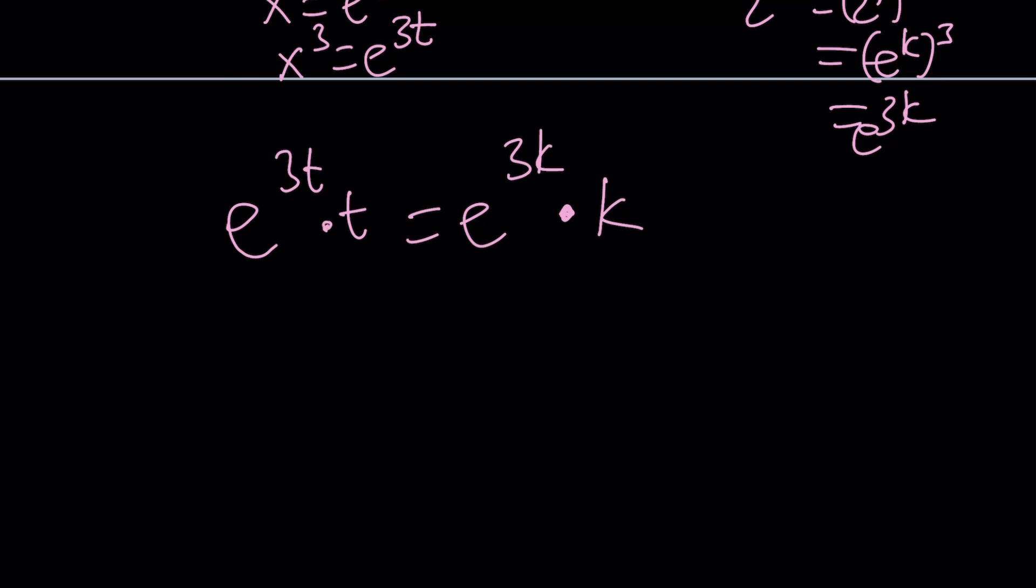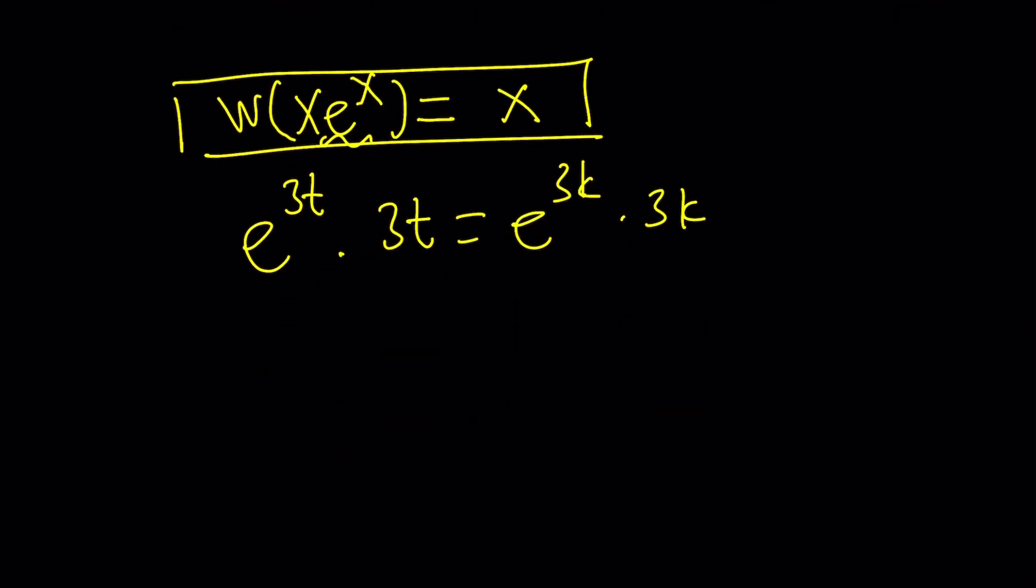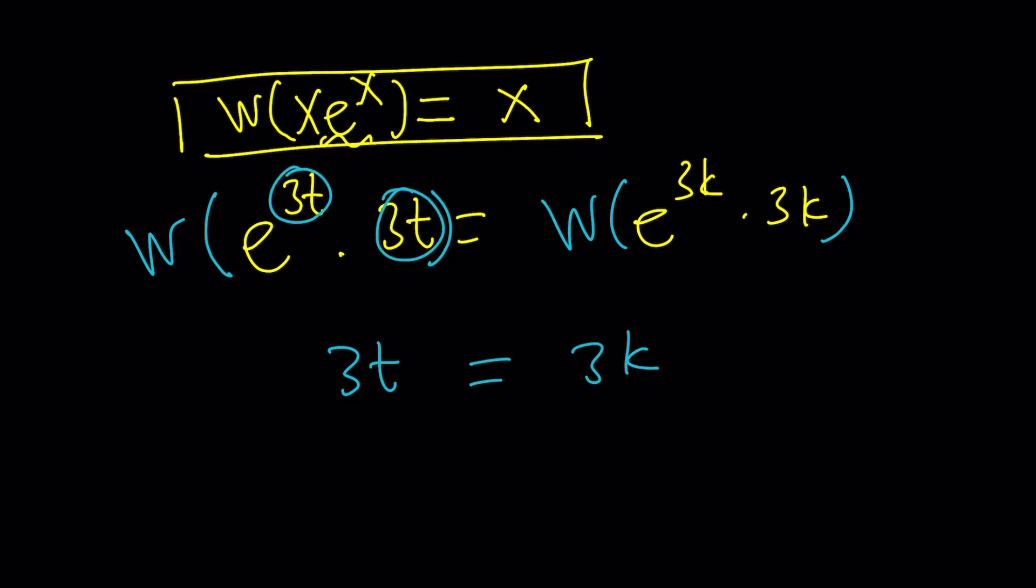Now in order to be able to apply Lambert's W function, you do need something like this. x e to the x, if you apply Lambert's W, you're going to get x. So that's basically the inverse function for this, but we don't have that structure. Let's go ahead and multiply both sides by 3. Now we get e to the 3t times 3t equals e to the 3k times 3k. And now if we Lambert's both sides, then we're going to get what we need. W of this equals W of that, and this gives us 3t and this one gives us 3k, which means t is equal to k.